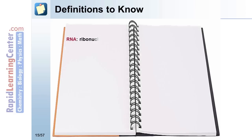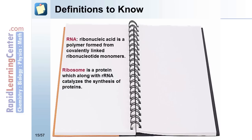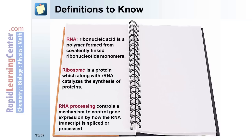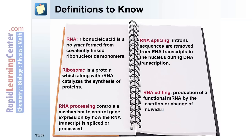Definitions to know. RNA (ribonucleic acid) is a polymer formed from covalently linked ribonucleotide monomers. Ribosome is a protein which, along with rRNA, catalyzes the synthesis of proteins. RNA processing controls a mechanism to regulate gene expression by how the RNA transcript is spliced or processed. RNA splicing: intron sequences are removed from RNA transcripts in the nucleus during transcription. RNA editing: production of a functional mRNA by the insertion or change of individual nucleotides in an RNA molecule after it is synthesized.